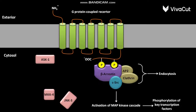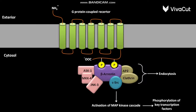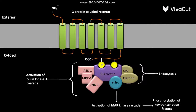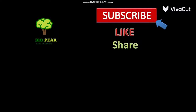The bound beta-arrestin then interacts with three proteins: ASK1, MKK4, and JNK3. This interaction leads to activation of the c-Jun kinase cascade.